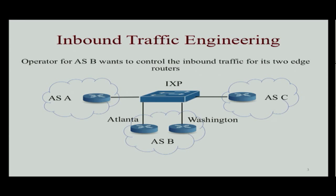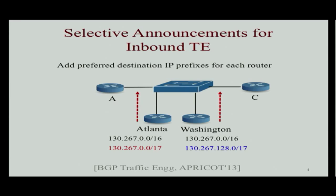This has been a standard problem. BGP provides various attributes with which you can play around, and there are various solutions to solve this problem. One such approach is called selective announcement, where you add preferred destination IP prefixes for each router along with the aggregated IP prefixes that you advertise. BGP also allows other attributes like AS path prepending, use of MEDs, or community tagging.